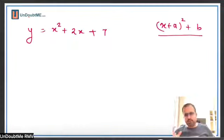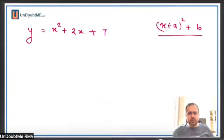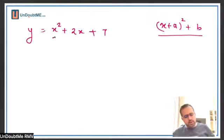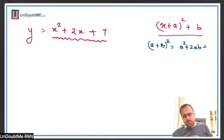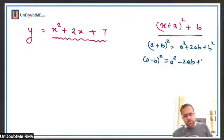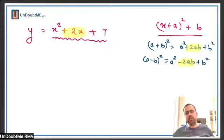Our first thought should be whether it will become a plus b whole square or a minus b whole square. If I write a plus b whole square, that will be a squared plus 2ab plus b squared. If I write a minus b whole square, it will be a squared minus 2ab plus b squared. The sign of the middle term decides which form to use.